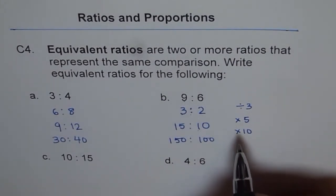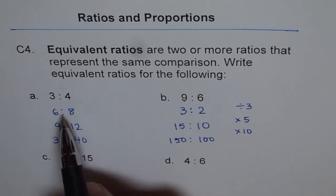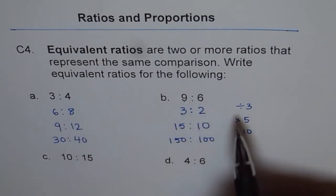So what is important to understand here is that to get equivalent ratios, we need to multiply or divide by the same number. Each term should be multiplied and divided by the same number.